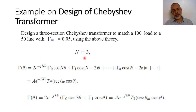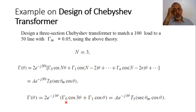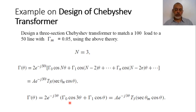For n equals 3, this equation is: Γ(θ) = 2·e^{-j3θ} · [γ_0·cos(3θ) + γ_1·cos(θ)]. We have only these two terms because there is no cosine of negative theta. So we have four terms: γ_0, γ_1, γ_2, γ_3.